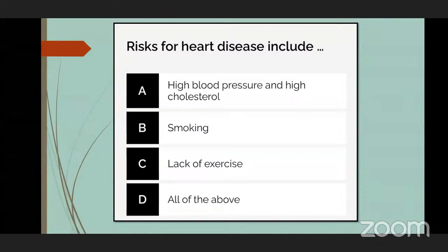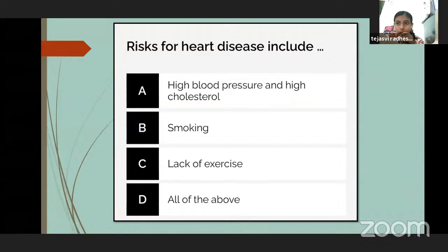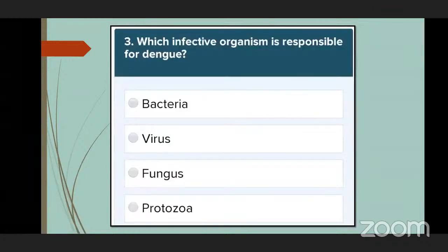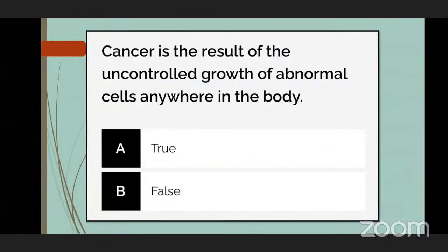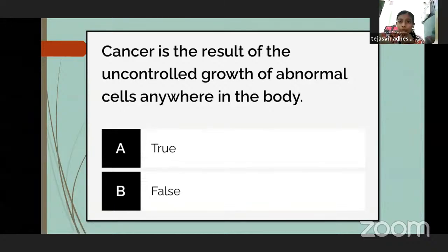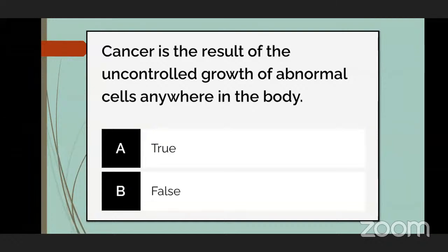Risks for heart disease include: high blood pressure, high cholesterol, smoking, and lack of exercise — all of the above. Which infective organism is responsible for dengue? Students answer: virus. Is it true that cancer is the result of uncontrolled growth of abnormal cells anywhere in the body? Students answer: true. Cancer is indeed because of abnormal and uncontrolled growth of cells in the body.